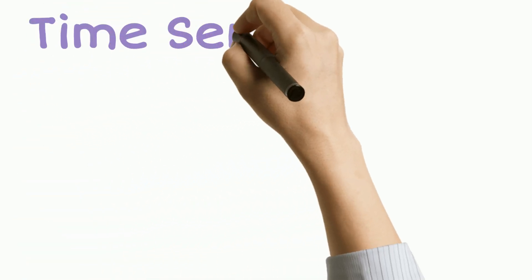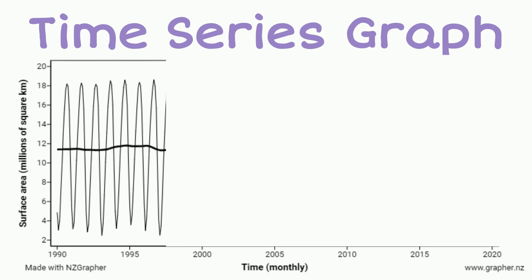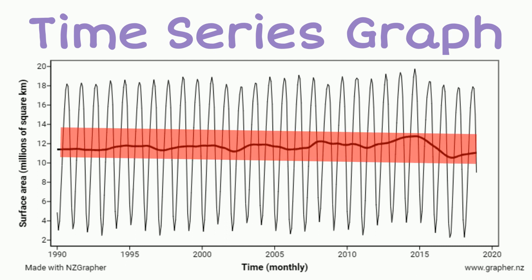So if we go to our graph we'll notice that the data starts in January 1990 and continues until December 2018. The solid black line in the middle is the trend line. This is an average of our data values.